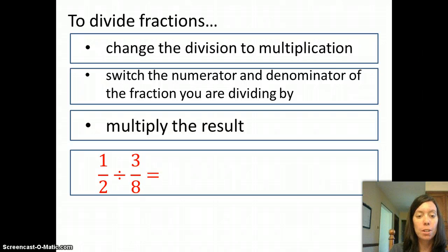First, I will change the division to a multiplication. So I'm going to cross out that divide sign and make it a times. And then I will flip over the 3/8. So the new problem will look like this: 1/2 times 8/3. That's the same thing as 1/2 divided by 3/8. It's just a different way of writing it. But this is a problem that we know how to solve.